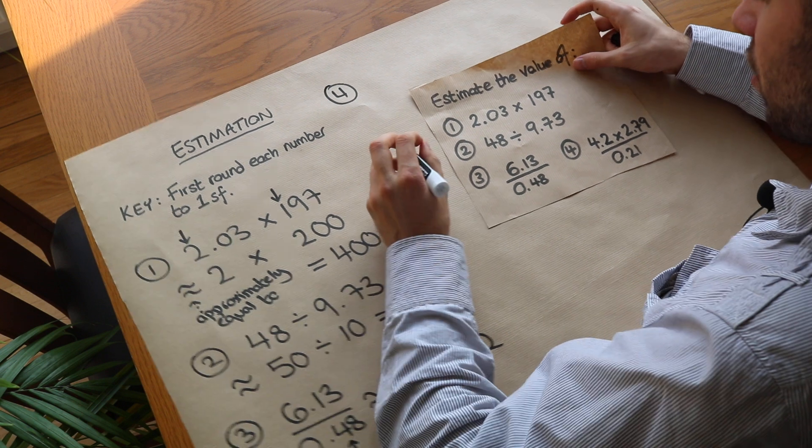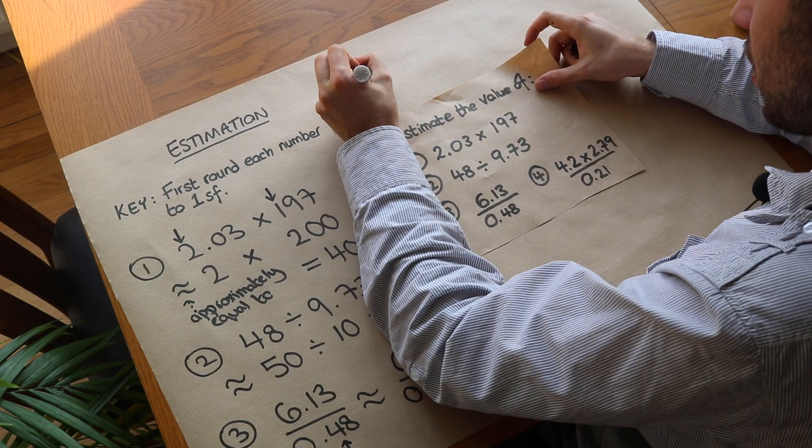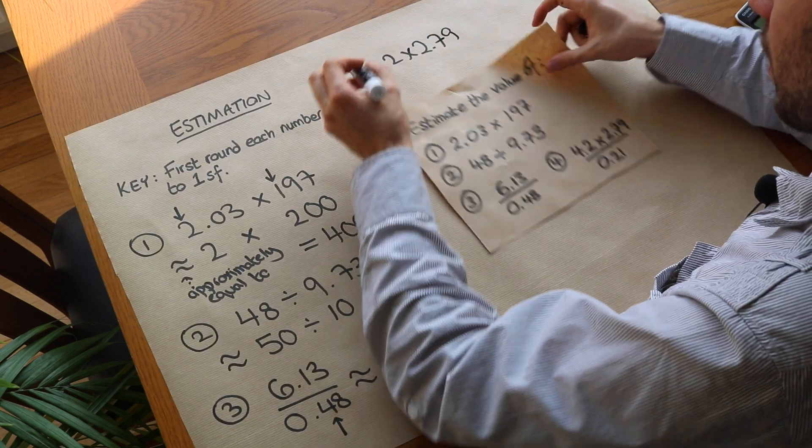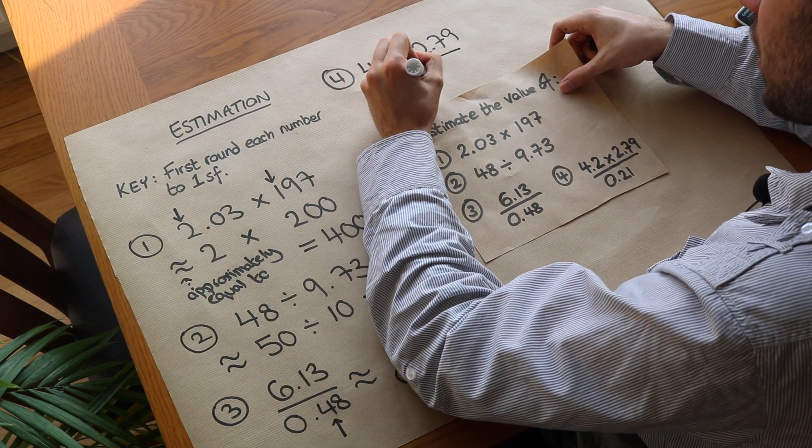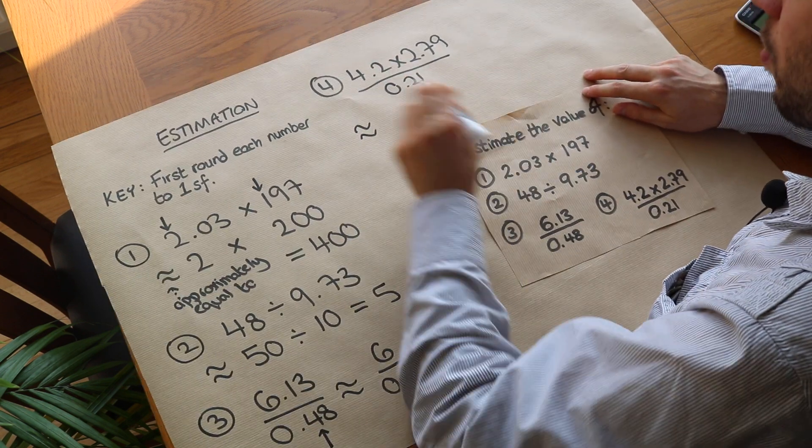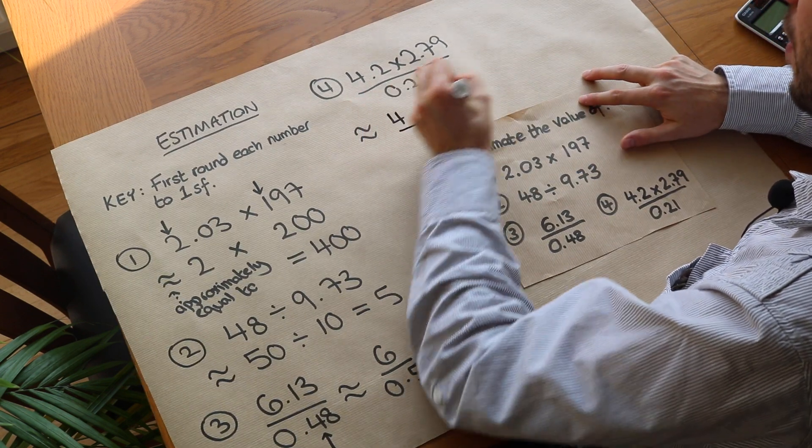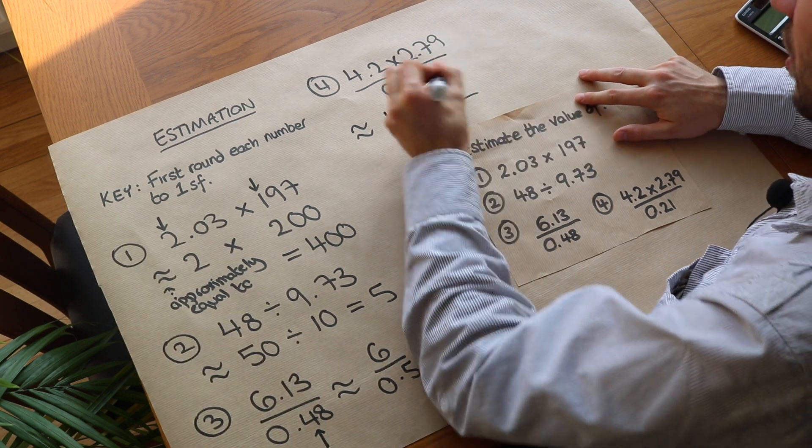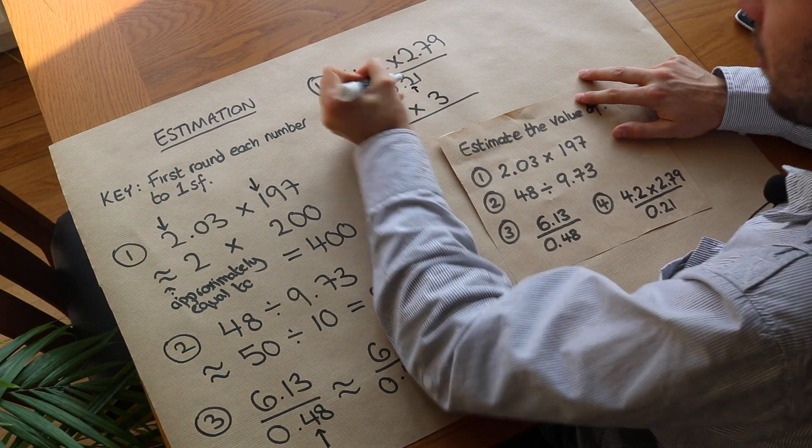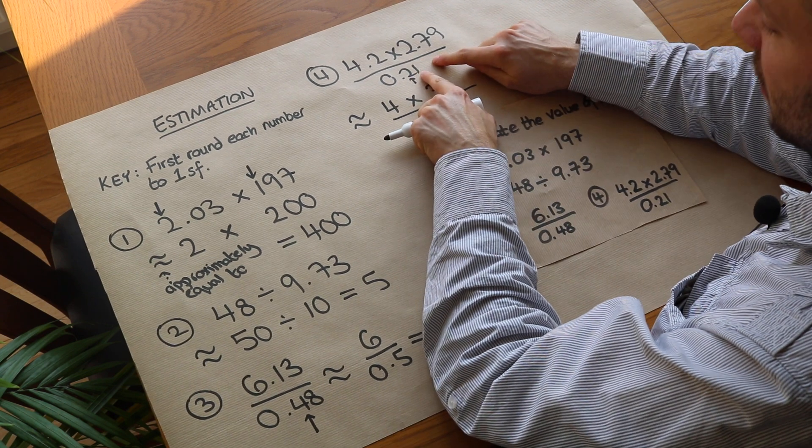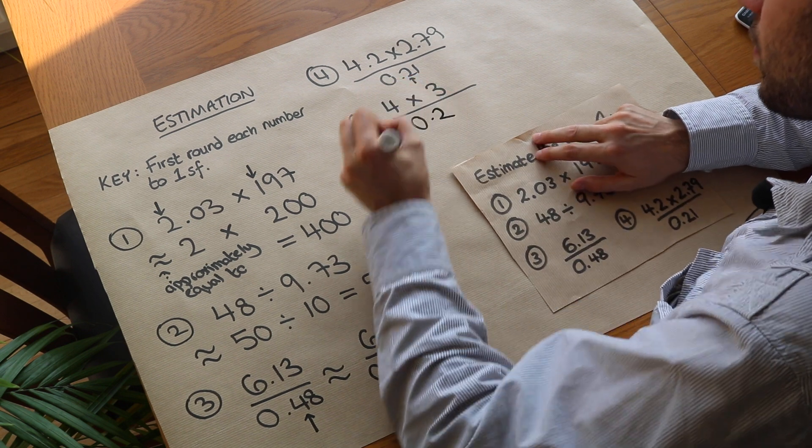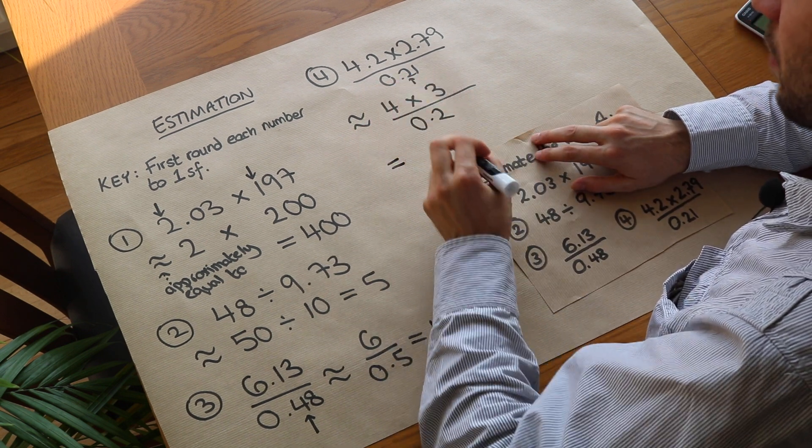And what about this last one here? We've got 4.2 times by 2.79 over 0.21. Let's round each one first. Well 4.2 is just 4 to one significant figure. 2.79 is just 3 to one significant figure. And 0.21 - the 2 is the first non-zero digit. Check the digit after. Is it greater or equal to 5? No it isn't, so that stays as 0.2. Now 4 times 3 is obviously 12, so it's 12 divided by 0.2.